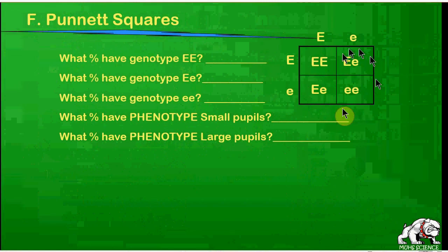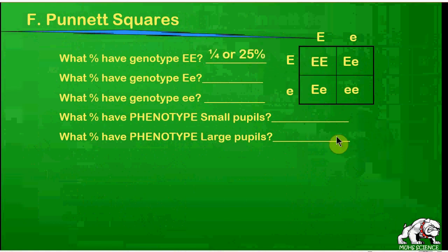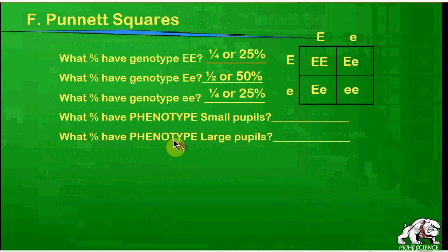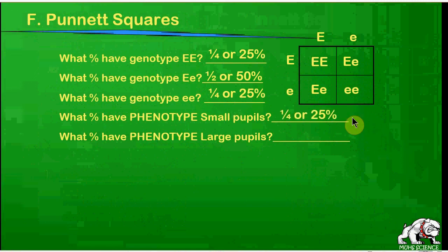So what does the completed Punnett square tell us? What percentage have the genotype big E, big E? There are four boxes and only one has big E, big E — that's one quarter, or 25%. What percentage have genotype big E, little e? There are two out of four — that's one half, or 50%. What percentage have genotype little e, little e? That's one out of four, or 25%. What percentage have the phenotype small pupils? Small pupils only occur with little e, little e — so only one out of four, or 25%, have small pupils.